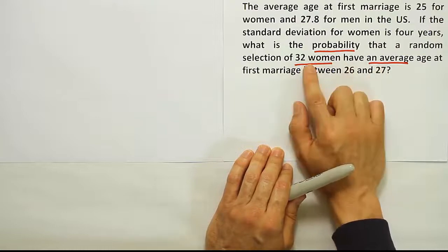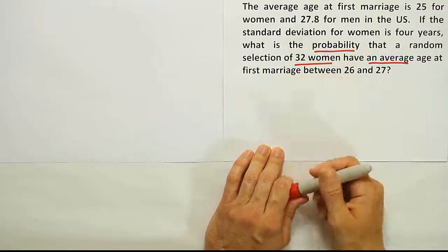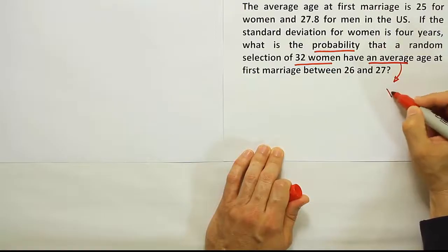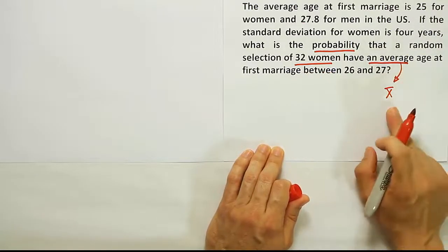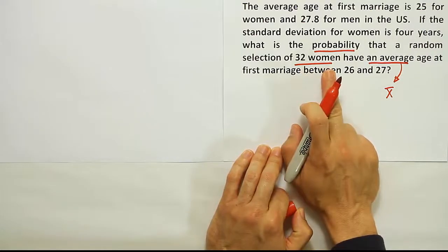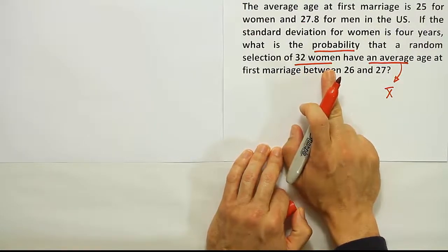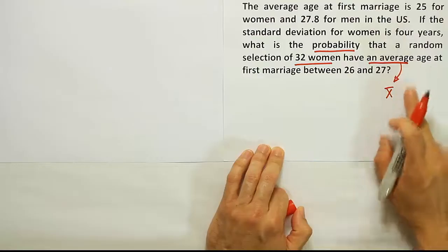An average for 32 women is x-bar, right? In this case, they're talking about x-bar for a group of 32 women. It's x-bar if it's an average from a sample, and 32 women clearly is not the population of women, so I know that it's not mu. This average is not mu, it's the x-bar for the 32 women.